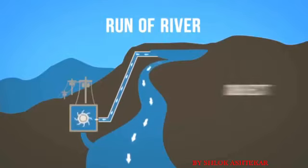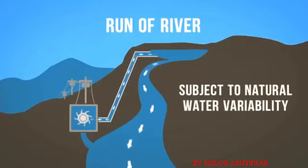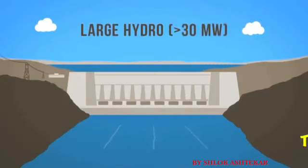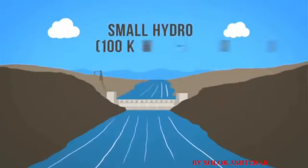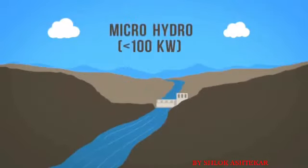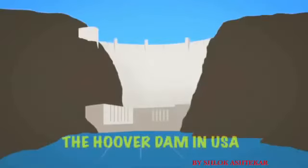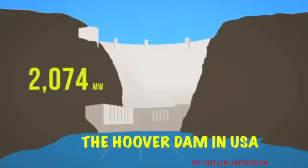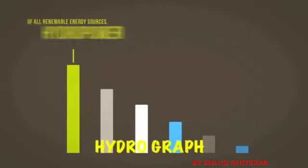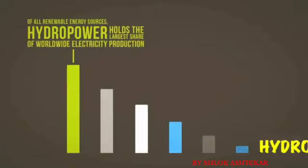Because run of river hydro is subject to natural water variability, it is more intermittent than dammed hydro. There are various sizes of hydro plants: large hydro, greater than 30 megawatts; small hydro, 100 kilowatts to 30 megawatts; and micro hydro, less than 100 kilowatts. The Hoover Dam in the United States is a whopping 2,074 megawatts, enough to serve 1.3 million people. Of all renewable energy sources, hydro power holds the largest share of worldwide electricity production.